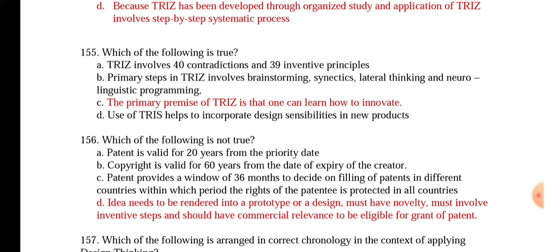Question 156: Which of the following is not true? Patent is valid for 20 years from the priority date — that is true. Copyright is valid for 60 years from the date of expiry of the creator. Patent provides a window of 36 months to decide on filing patents in different countries, within which the rights of the patentee are protected. The wrong statement is: an idea needs to be rendered into a prototype or design, must have novelty, inventive steps, and commercial relevance to be eligible for grant of patent — this is not true.